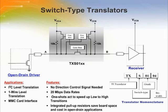Another type of auto direction sensing translator is a switch type translator. This device is useful in translation applications where an open drain driver needs to be interfaced. I2C is a popular application for this type of level translation. These translators utilize an N-channel pass gate transistor to open and close the connection between the A port and B port. TI's family of switch type translators integrates pull-up resistors, which saves board space and cost in open drain applications.